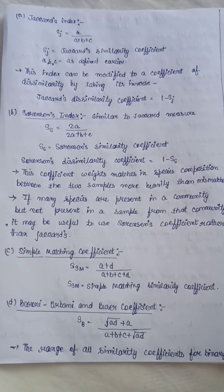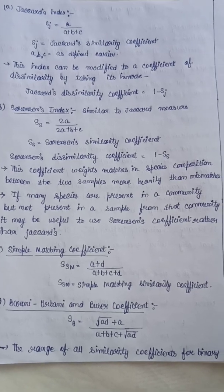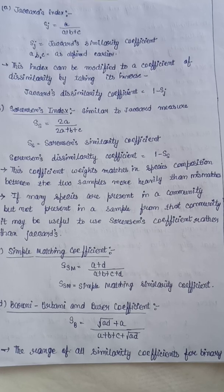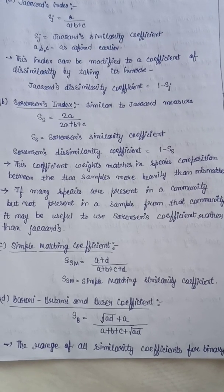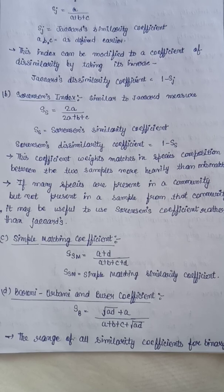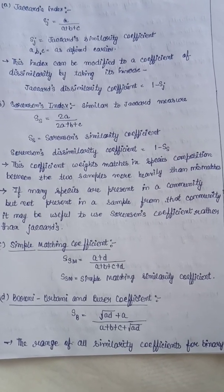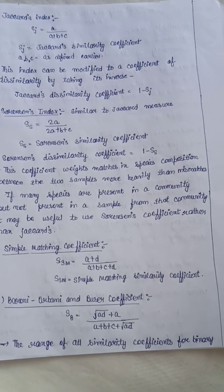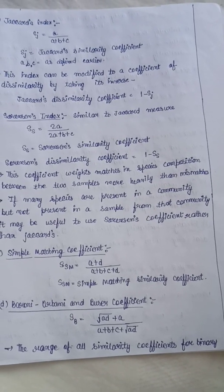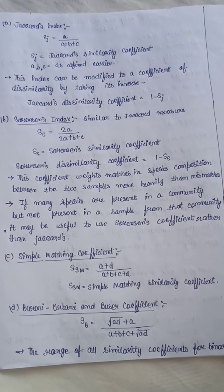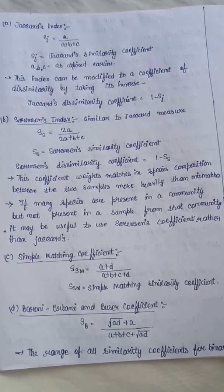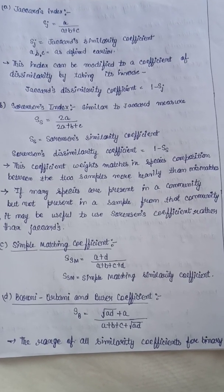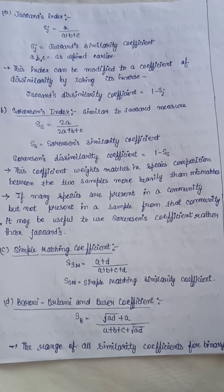Another index is Sorensen's index, which is similar to the Jaccard measure. Its formula is: SS = 2a / (2a + b + c), where SS denotes the Sorensen similarity coefficient. Dissimilarity is given by 1 − SS. This coefficient weights matches in species composition between two samples more heavily than mismatches.